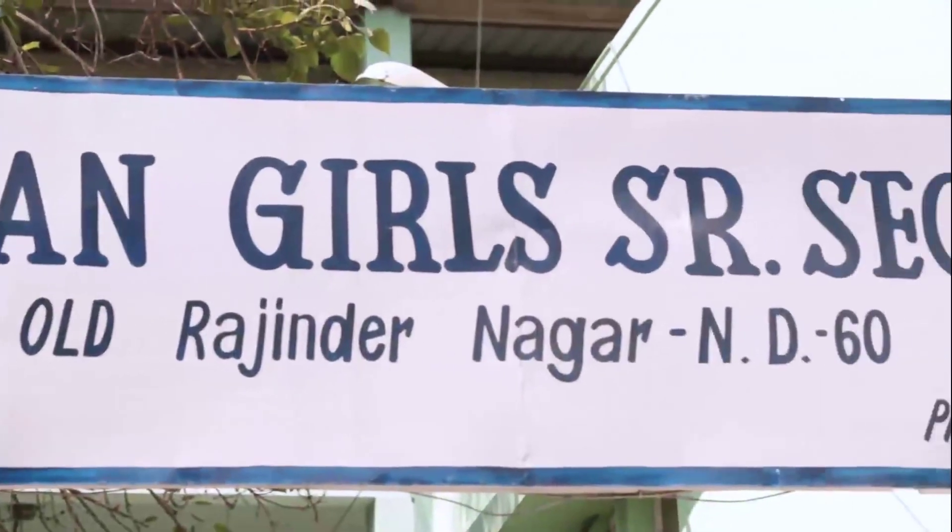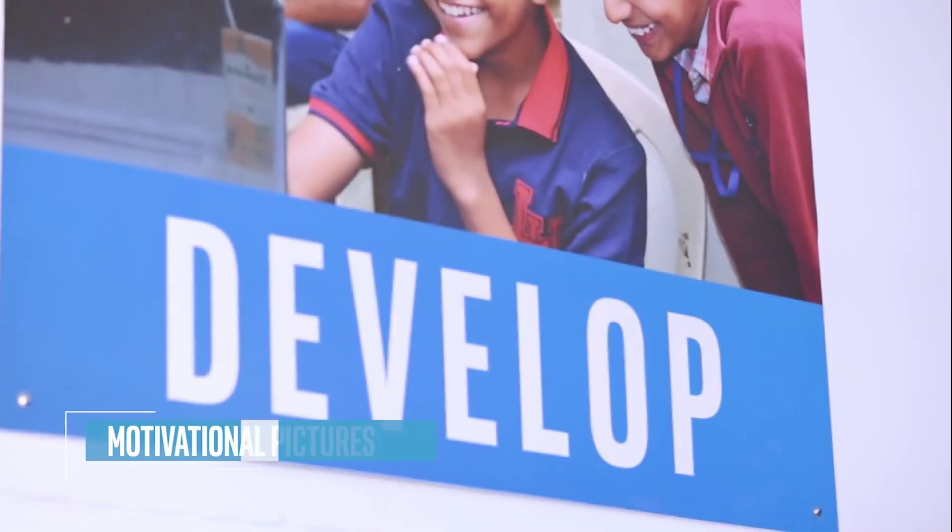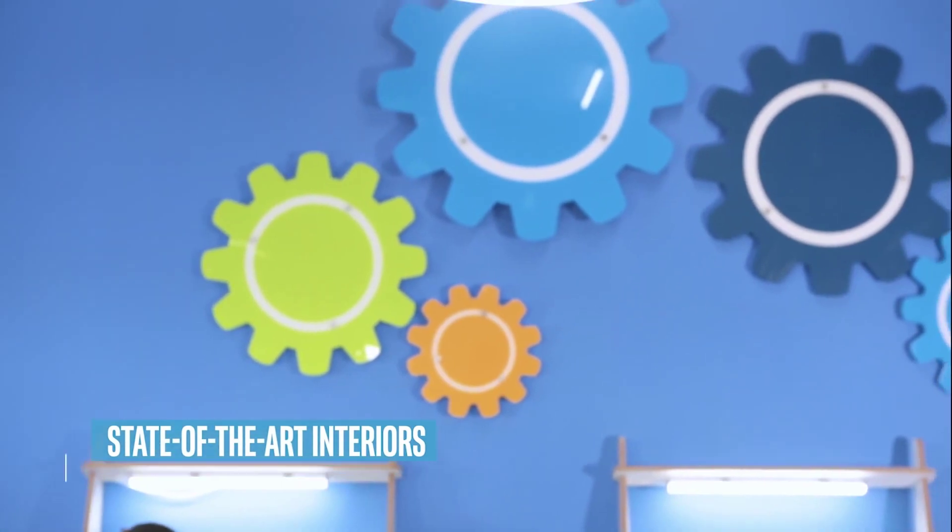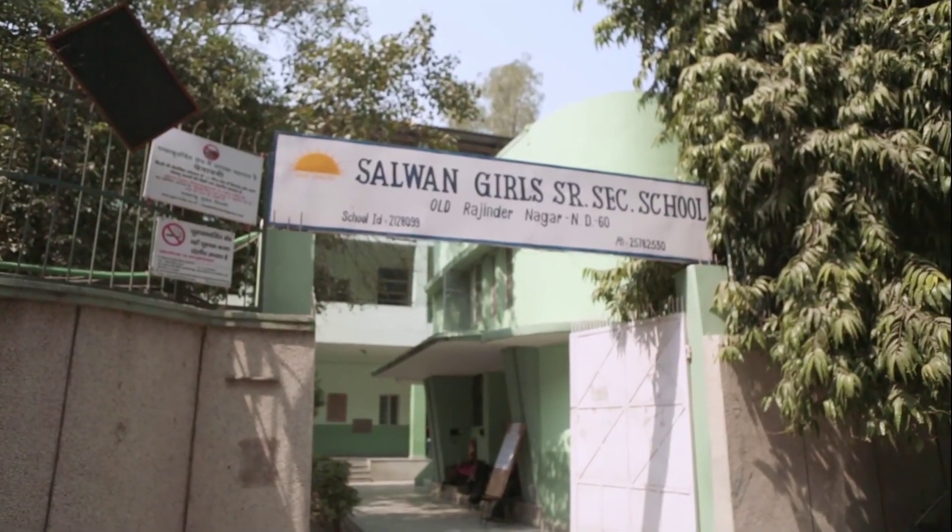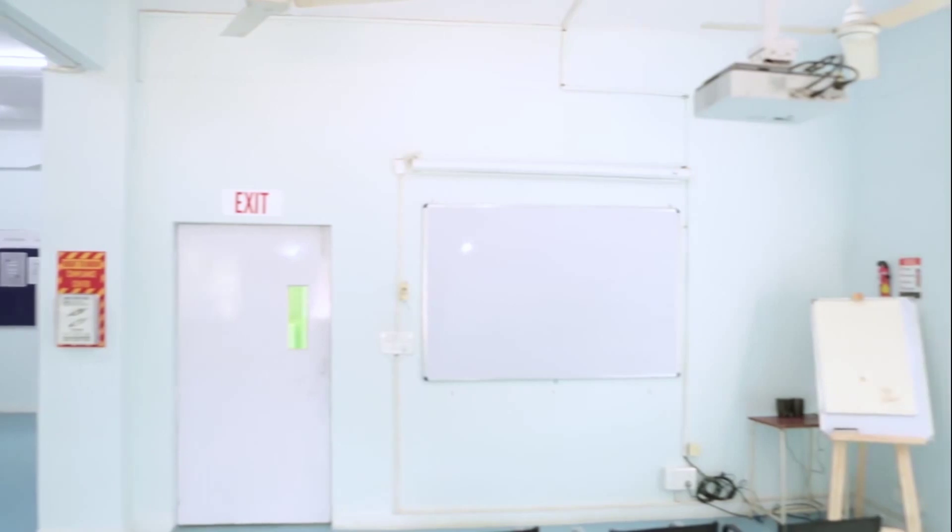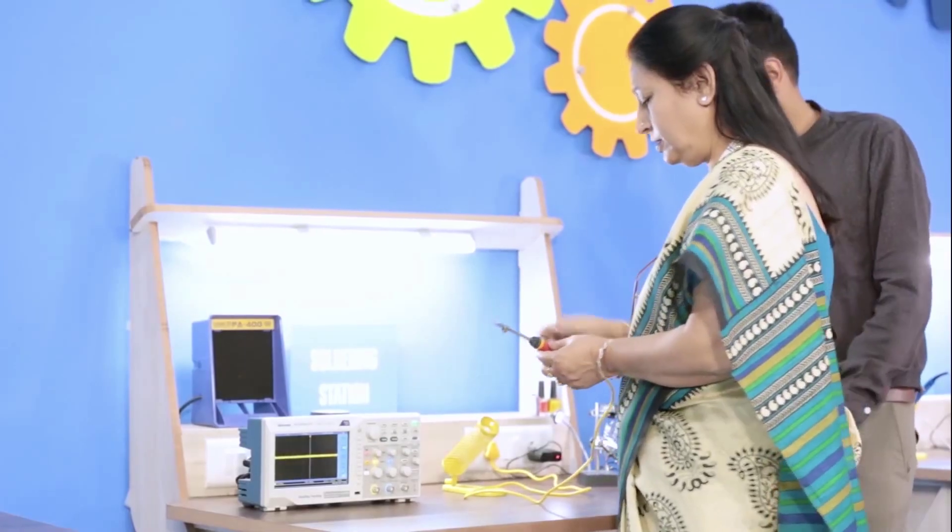Presenting to you the first Atal Tinkering Lab in India at Salwan Government Girls School, Delhi. The lab is built with a modernistic design approach and cutting edge facilities located within the main buildings of the school.